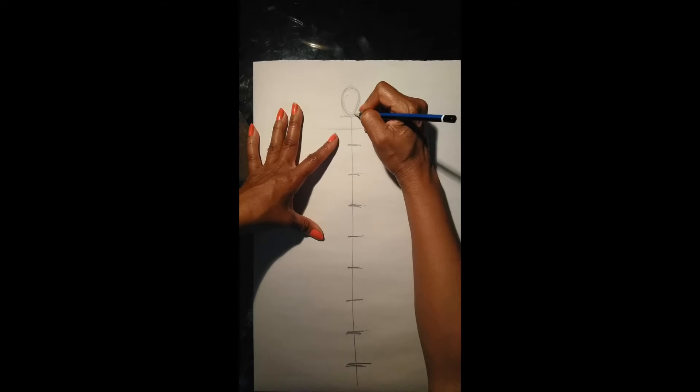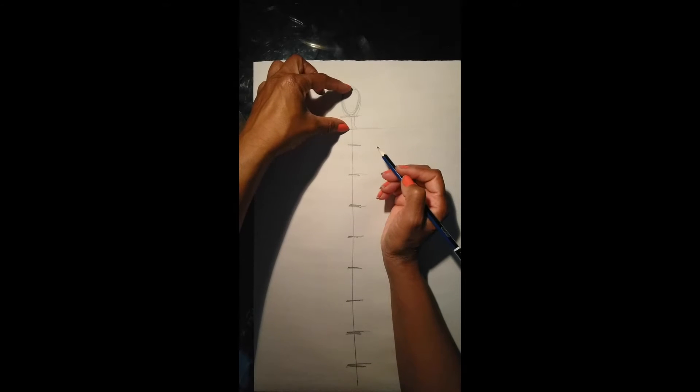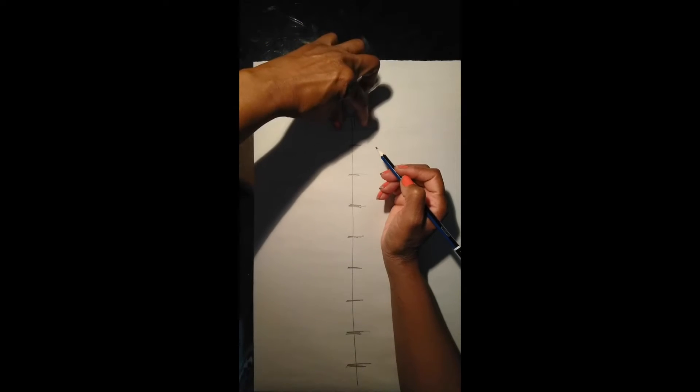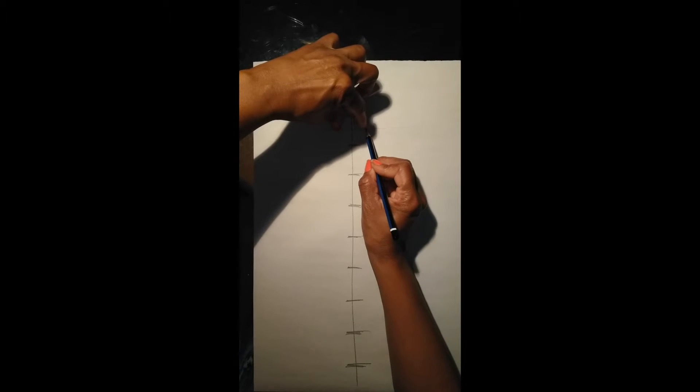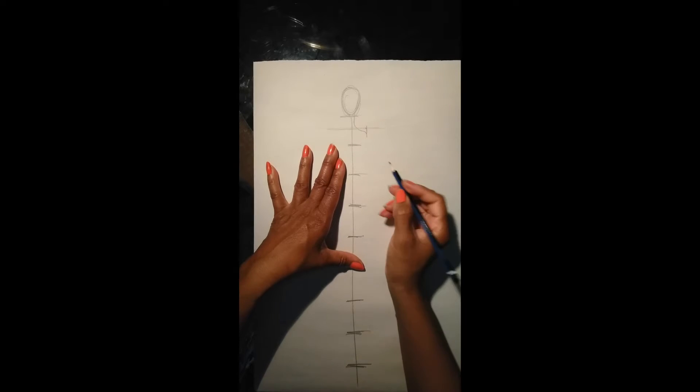So one simple way to achieve this is by drawing the croquis on the right side and then folding your paper and tracing the second side. So go ahead, follow along and we will create your front view croquis that you can use to make your flat sketches.